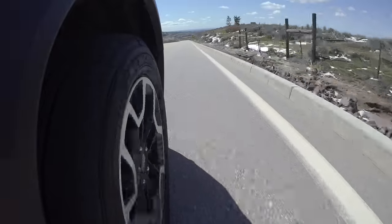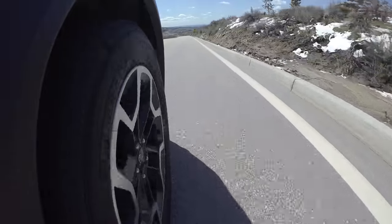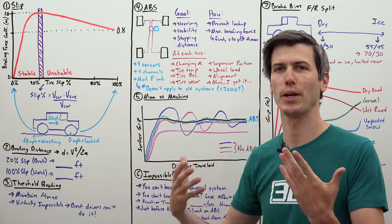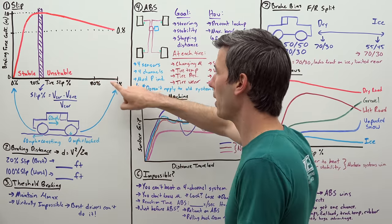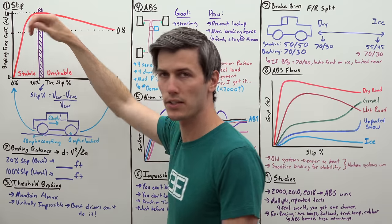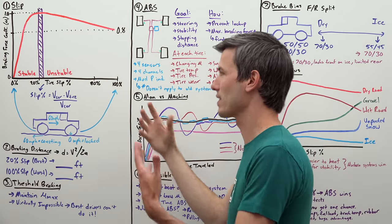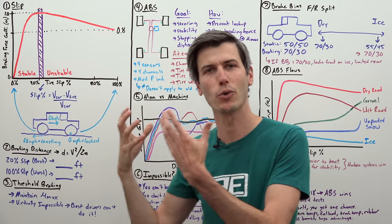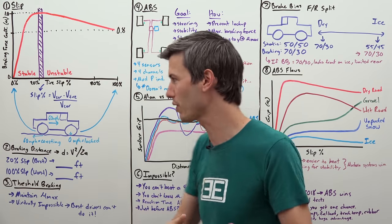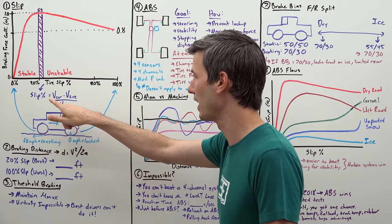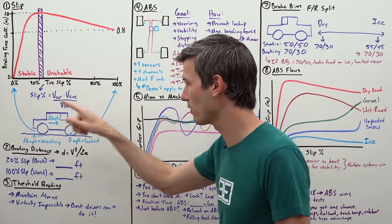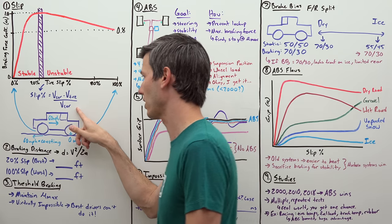Before we get into threshold braking versus ABS, there's some background theory that we need to understand surrounding slip. We're looking here at a graph of slip on the bottom and our y-axis is essentially our grip. Slip as a percentage is essentially comparing your tire speed versus your vehicle speed as a ratio. If you write it out as an equation, slip percentage equals the velocity of your car minus the velocity of your tire divided by the velocity of your car.